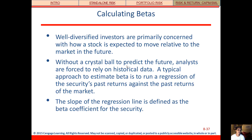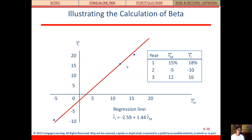In this class we don't need to calculate betas, but beta is calculated through regression. Here's a regression line fitted to match data for market returns and a particular stock's returns over three prior years. The line has a y-intercept of negative 2.59 and a slope of 1.44, indicating a positive upward slope — the slope amount indicating the steepness.